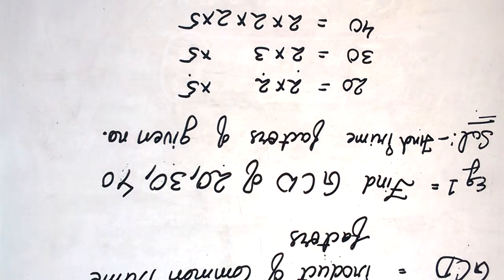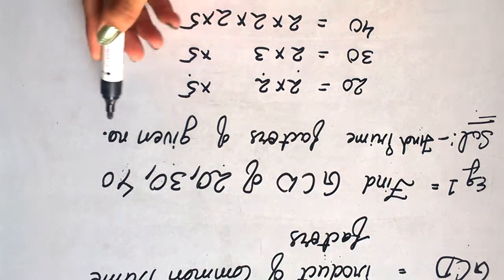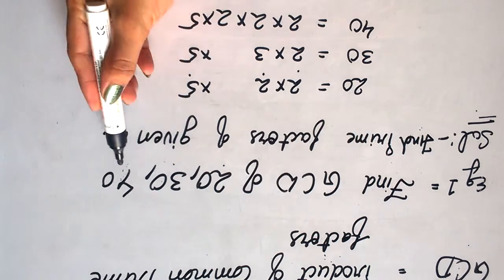For the solution, firstly we have to find prime factors of the given numbers which are 20, 30, and 40.